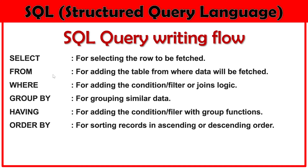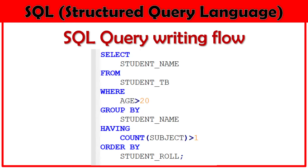In FROM we add the table name and in SELECT we add the columns of that table. Here is a basic example showing this flow: SELECT student_name FROM student WHERE age is greater than 20, GROUP BY student_name, HAVING COUNT of subject is greater than 1. In WHERE we simply add a condition or filter, and whenever we want logic based on an aggregate function we use HAVING.